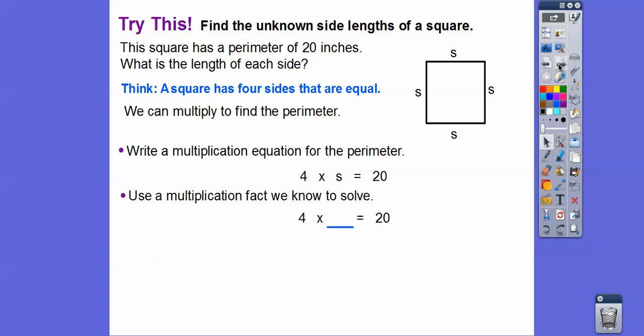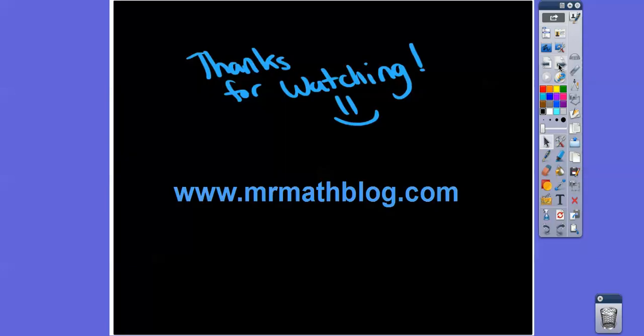So use multiplication facts. Four times what number equals 20? Well, hopefully we know that 4 times 5 equals 20. So the length of each side of the square is going to be 5 inches. All right, you guys. I hope that made sense, and I hope you're doing well. Take care.